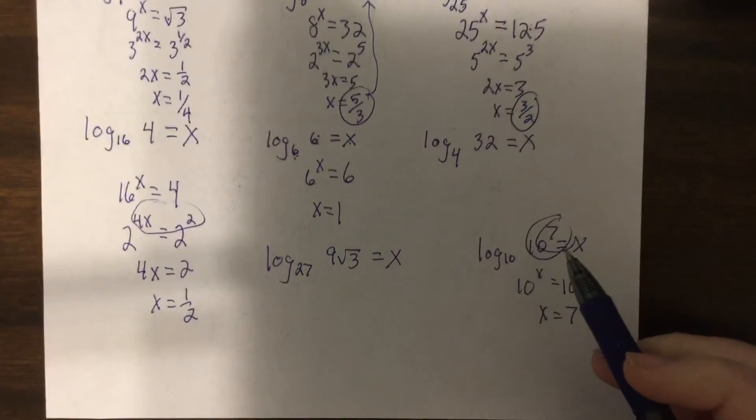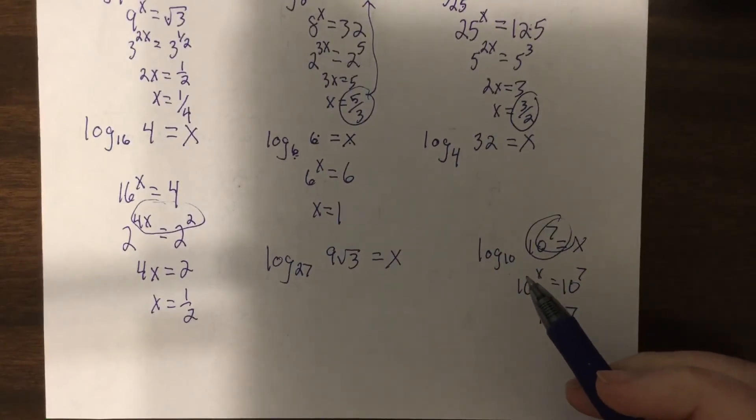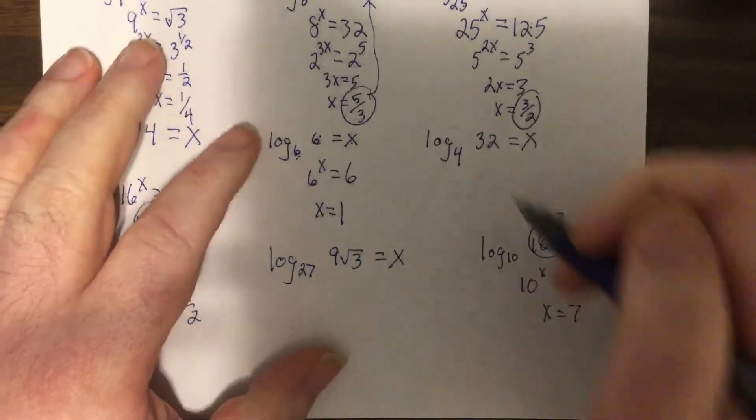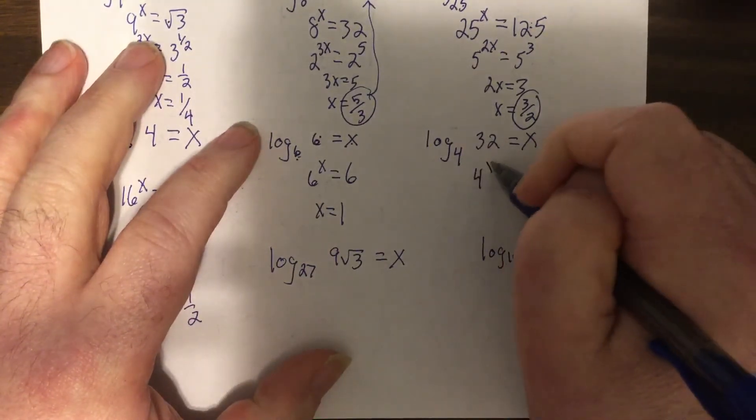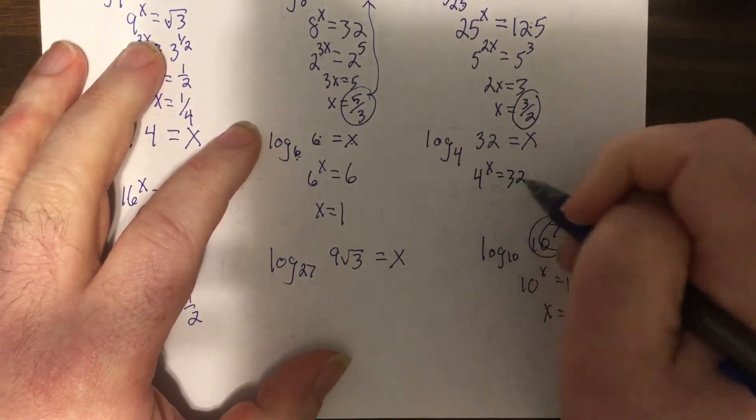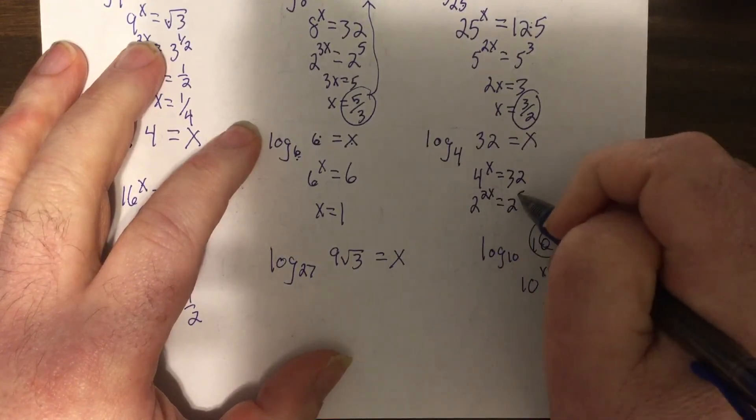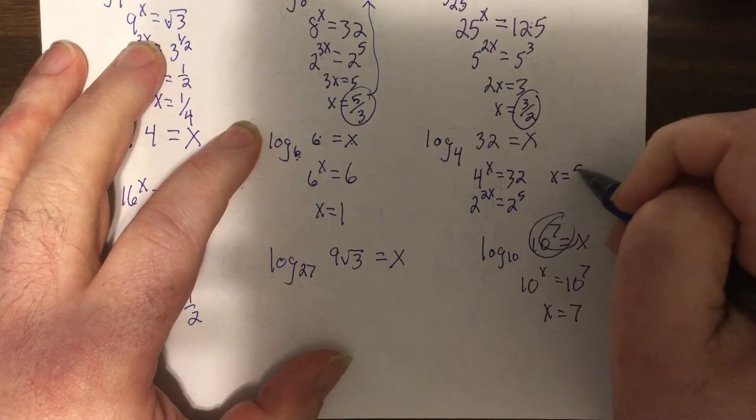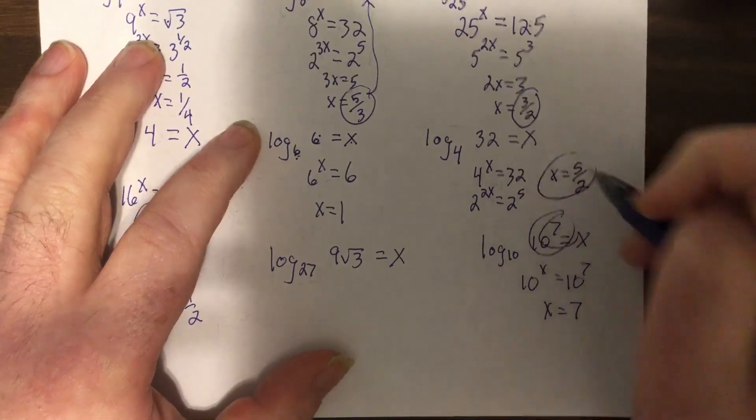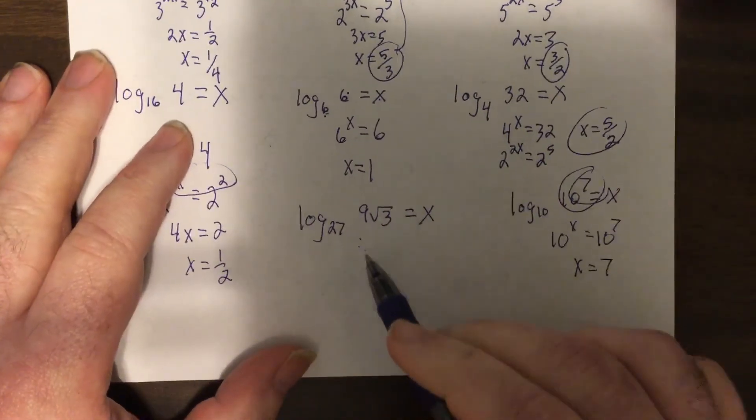Anyways, 4 to the x equals 32, so 2 to the 2x equals 2 to the 5th, so x equals 5 over 2.